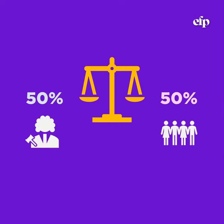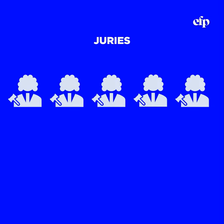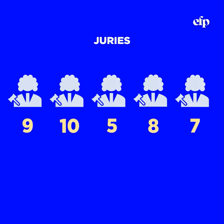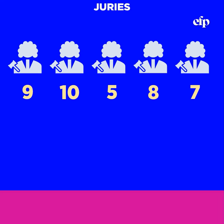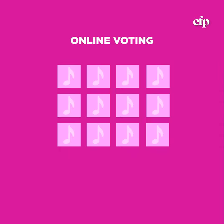The voting system will be 50% for online voting and 50% for a jury panel. The jury will consist of a group of 5 members who will give each song a score between 1 to 10 points. In the online voting, everyone will be able to vote for a maximum of 3 songs.